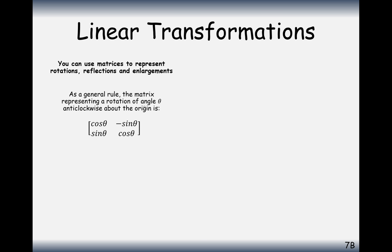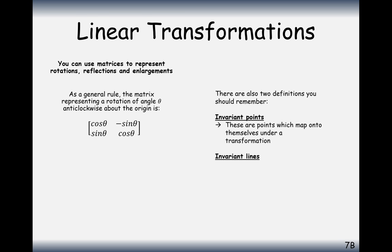A general rule exists for anticlockwise rotation matrices, though I prefer working through the geometry each time. Two important definitions: invariant points are points which map onto themselves under a transformation — for example, (0, 1) was an invariant point under the y-axis reflection. Invariant lines are lines which map onto themselves under a transformation — for example, the y-axis itself is an invariant line, as the line transformed onto itself.